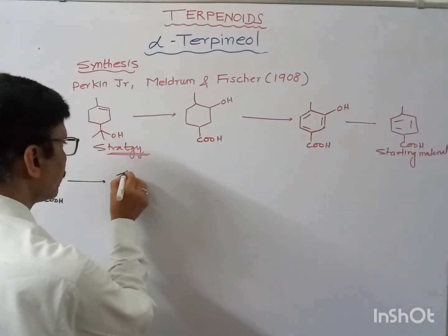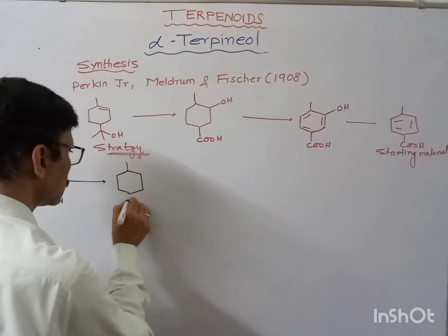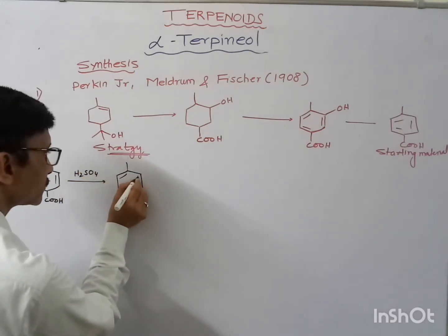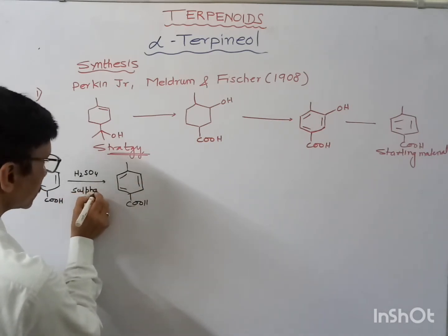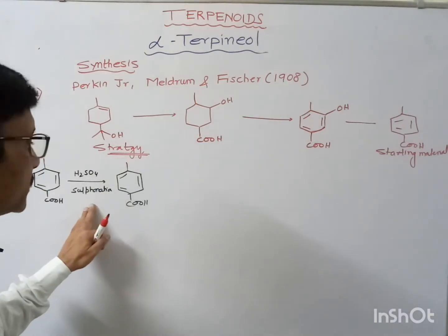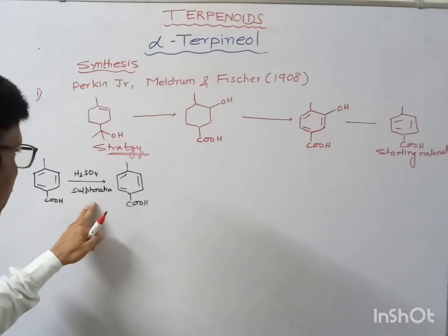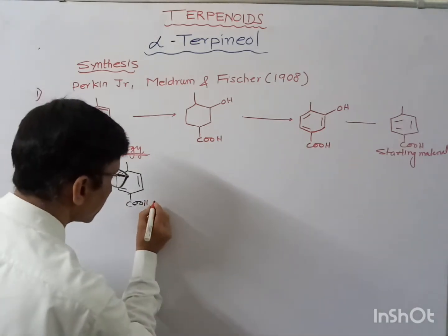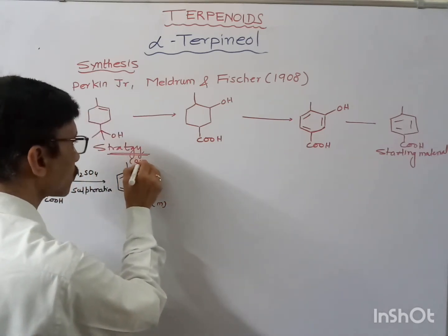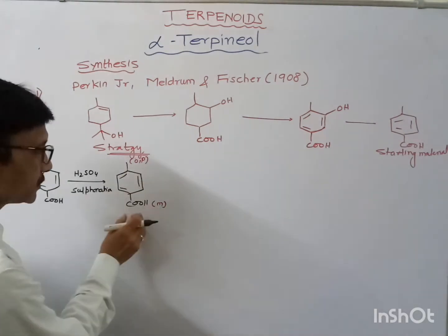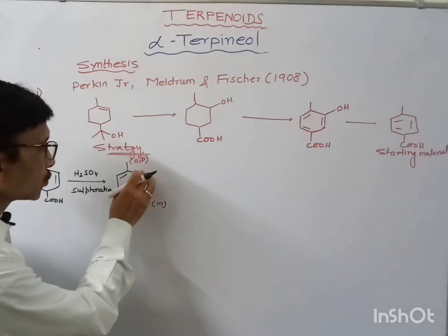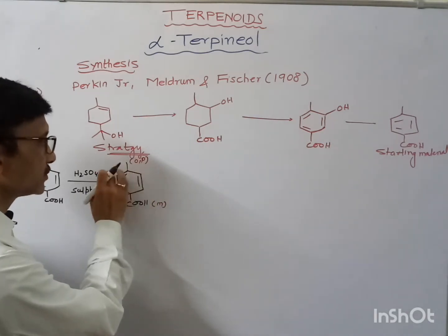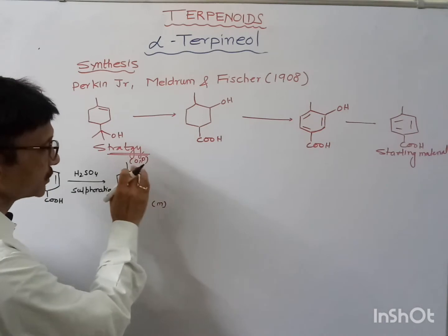Now we have to bring the OH group in. That can be done if we do sulfonation using H2SO4. Sulfonation brings the electrophilic SO3H group — at which position will it go? The COOH group is meta-directing, whereas the CH3 group is ortho-para directing. The para position is blocked, so the ortho position to the methyl group and meta to the COOH group is available.